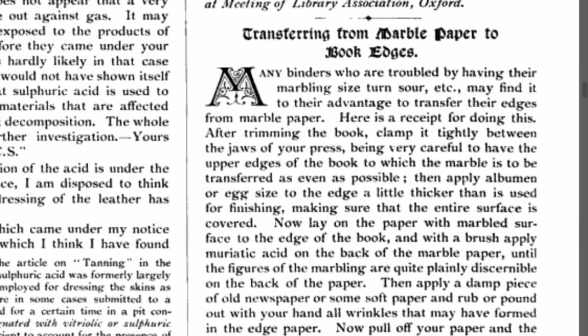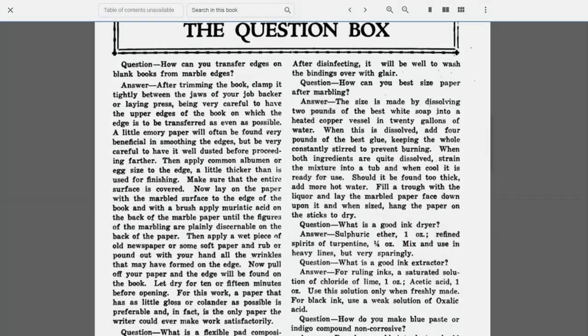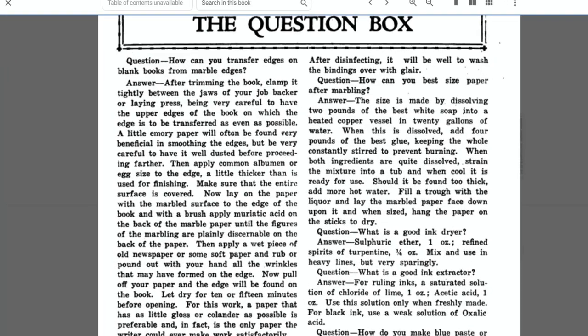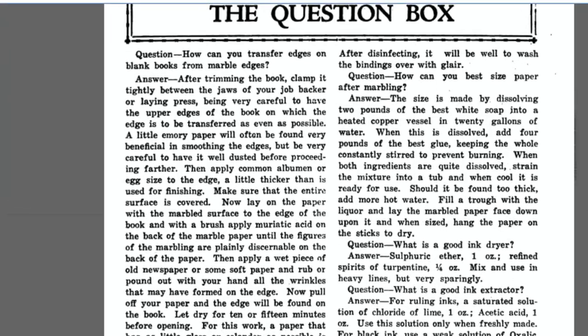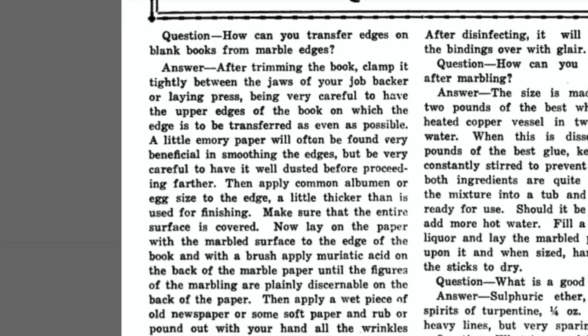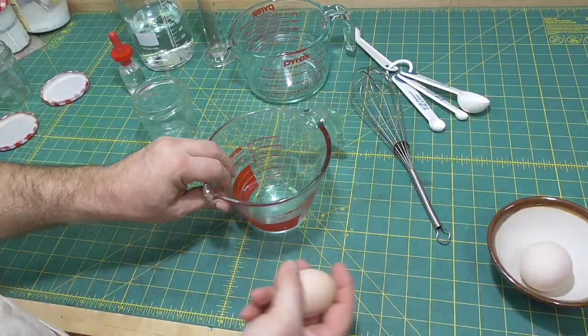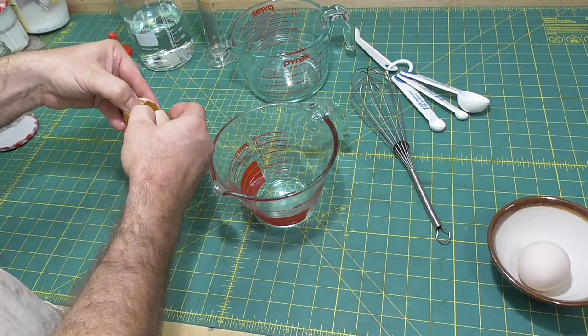Joel found another version of it in the Bookbinder of 1891 and the International Bookbinder of 1924, where they put some egg glare down, lay the marble paper on that, and then paint muriatic acid over the paper to transfer the edge.